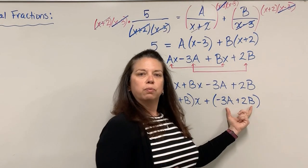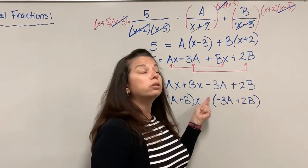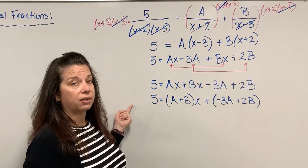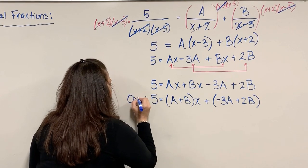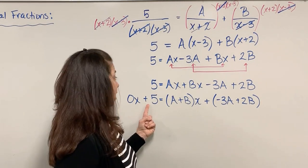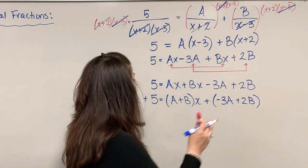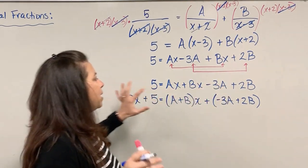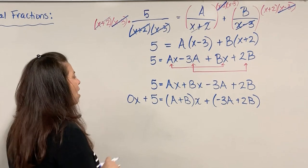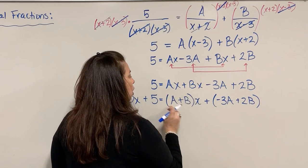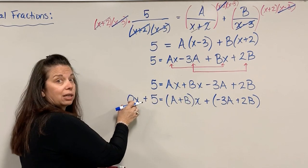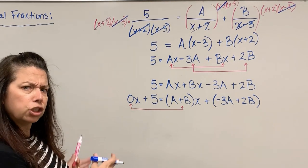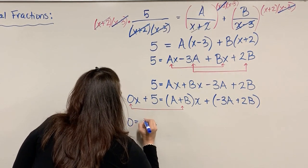This inside parentheses will give you some number. Over here we'll have some number times x. We don't have an x on the left hand side. Well technically we do. I can write 0x + 5 still equals this stuff on the right hand side. Now I can match things up. I'll say A+B is equal to 0.